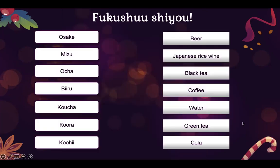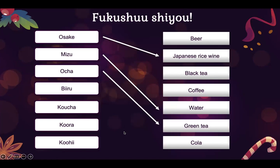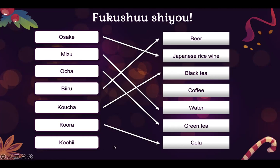Let's review those nomi mono. First one is o-sake — it's Japanese rice wine. How about mizu? Yes, it's water. Ocha — it's green tea. Biiru — beer. Koocha — yes, it's black tea. Koora — it's cola. And Koohii — yes, that is koohii, coffee.